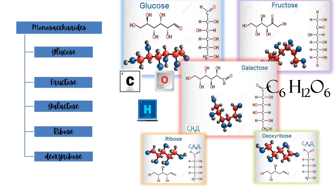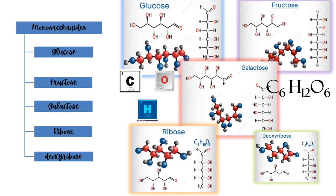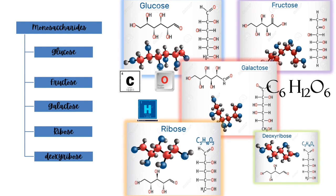Let us take a look at ribose. The ribose is synthesized by the body, and it appears in the form of medicine — particularly as an IV to improve heart function in cases of coronary disease. Ribose has a structural analog called deoxyribose, and ribose is a component of RNA, essential for coding, decoding, and expression of genes.